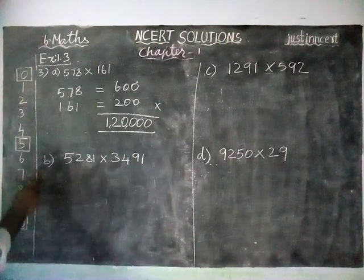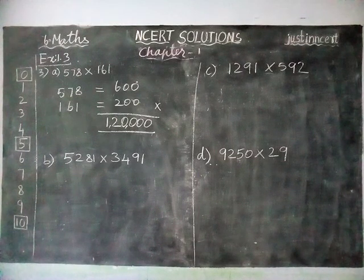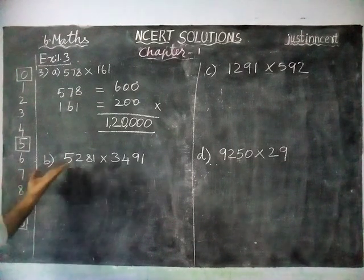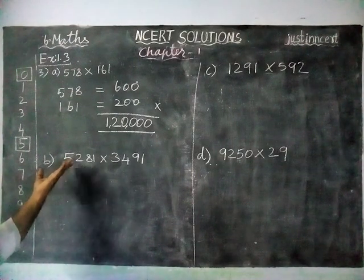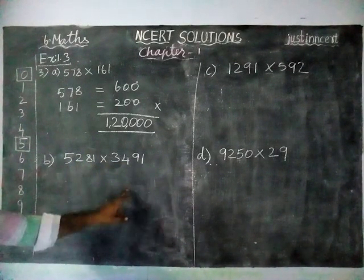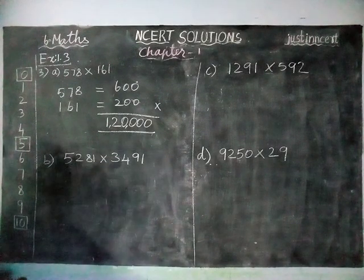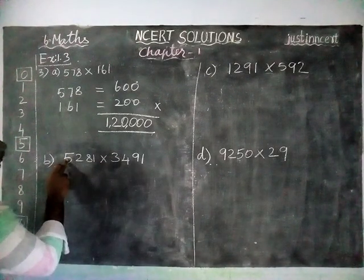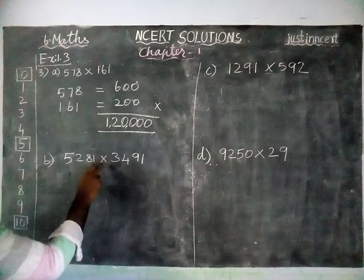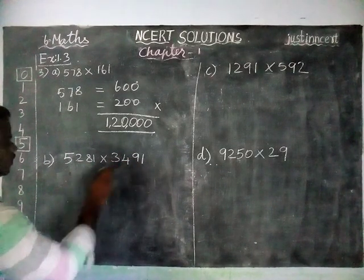Next, option B. Here we can do it in two methods. First, you can round off to nearest 1000. If you round off to nearest 1000, you will get one answer. If you round off to nearest 100, you will get a different answer. Now we are going to round off to 1000 first. Here 5,281 into 3,491, if we round off to nearest 1000.